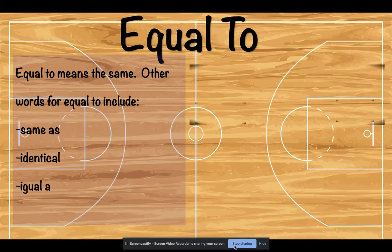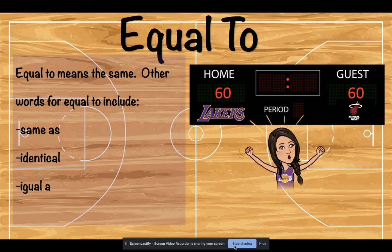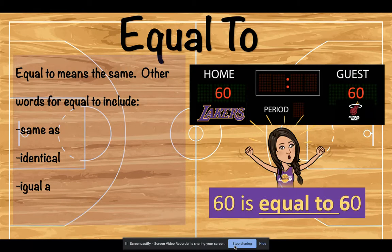Now let's look at this scoreboard. The Lakers have a score of 60. The Heat have a score of 60. Are any of these numbers bigger? Are any of these numbers smaller? No, right? Both of these are the same. Woo-hoo! It's a tie. So how would we read this? If both numbers are the same, we would say 60 is equal to 60. Awesome job.